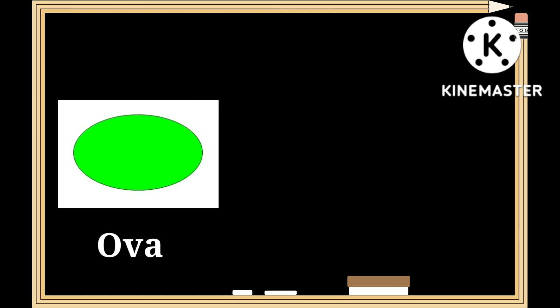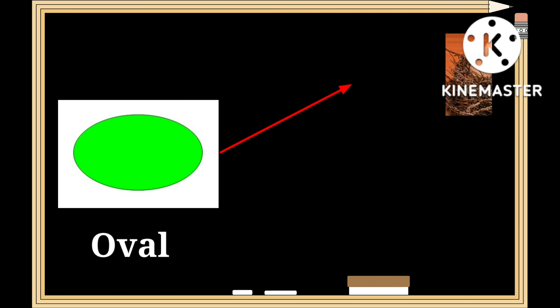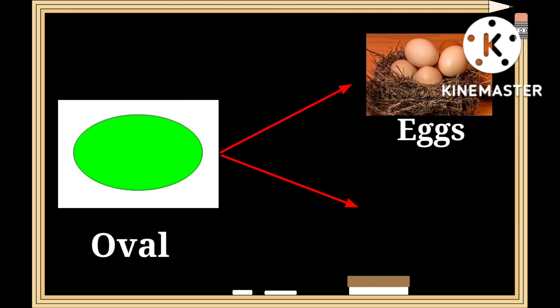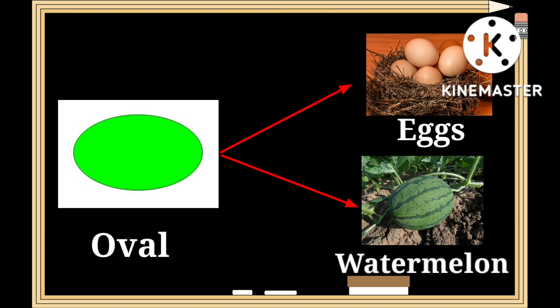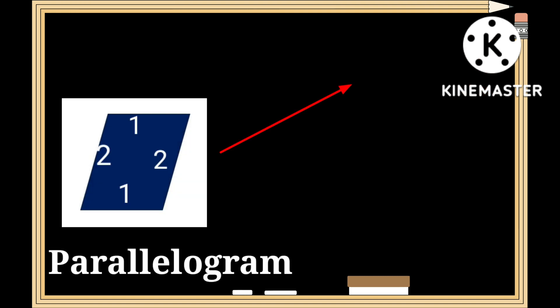This is a shape of an oval — o-v-a-l. Just like the shape of a circle, an oval also does not have any edges. Eggs and watermelon have a similar shape to that of an oval.